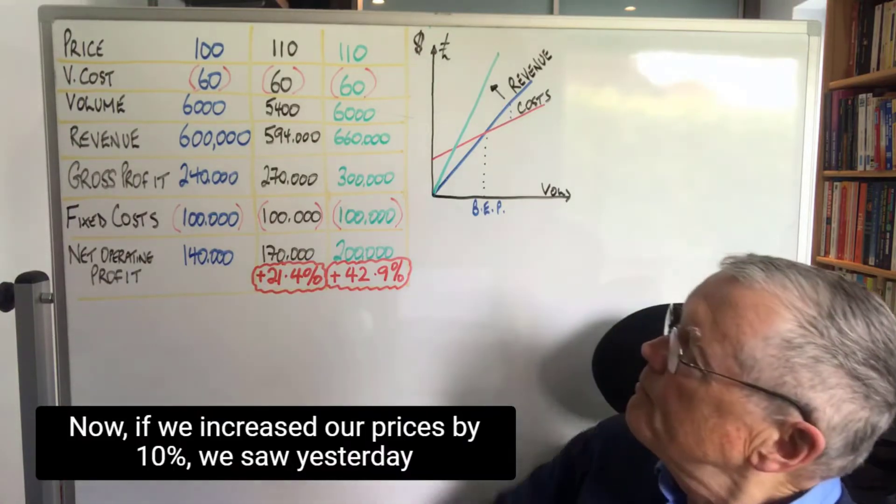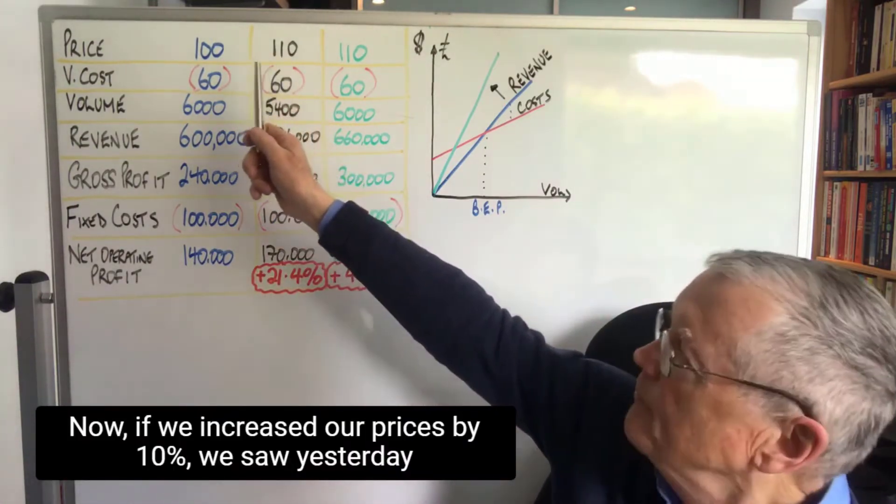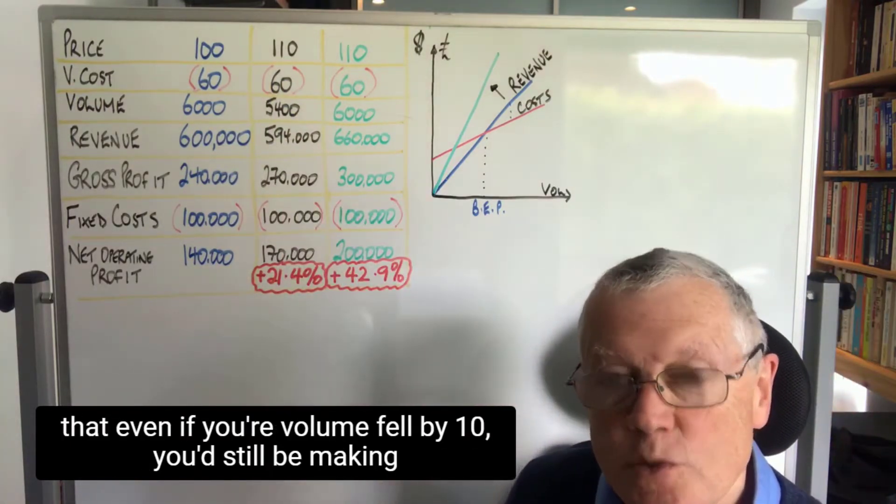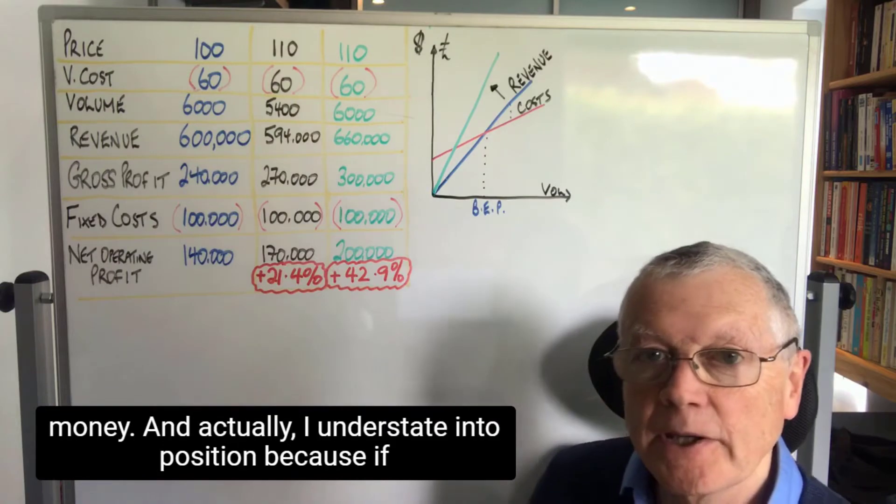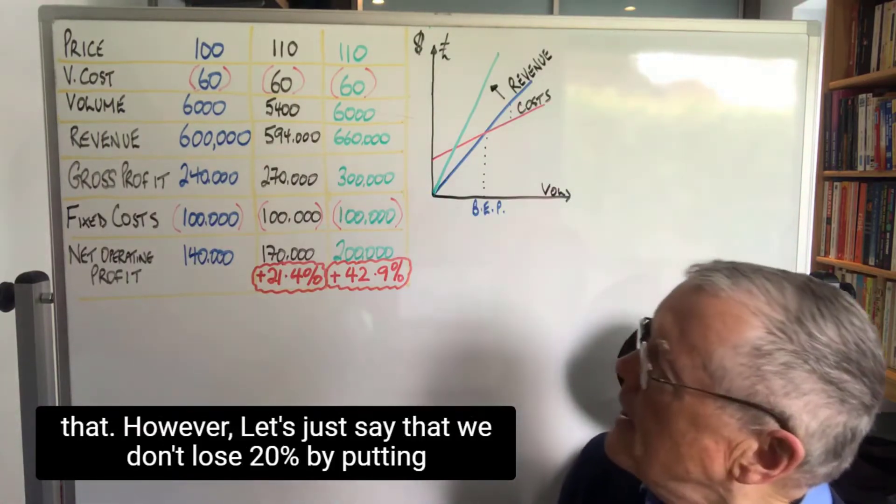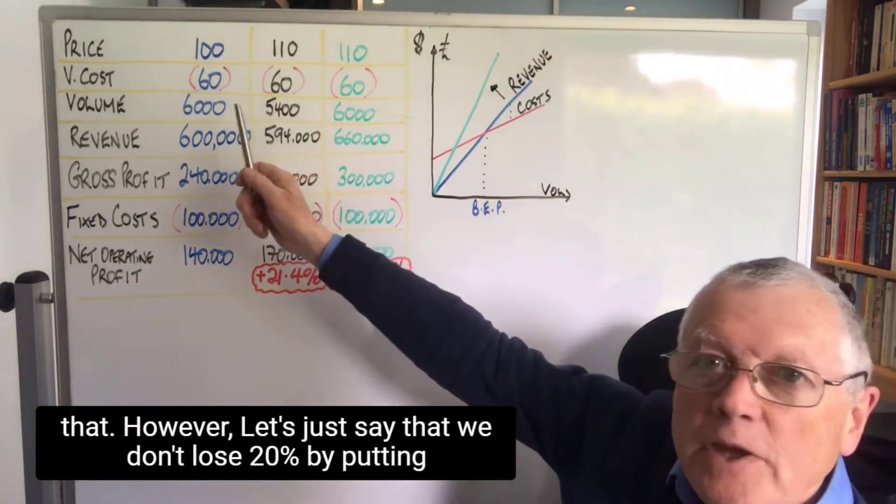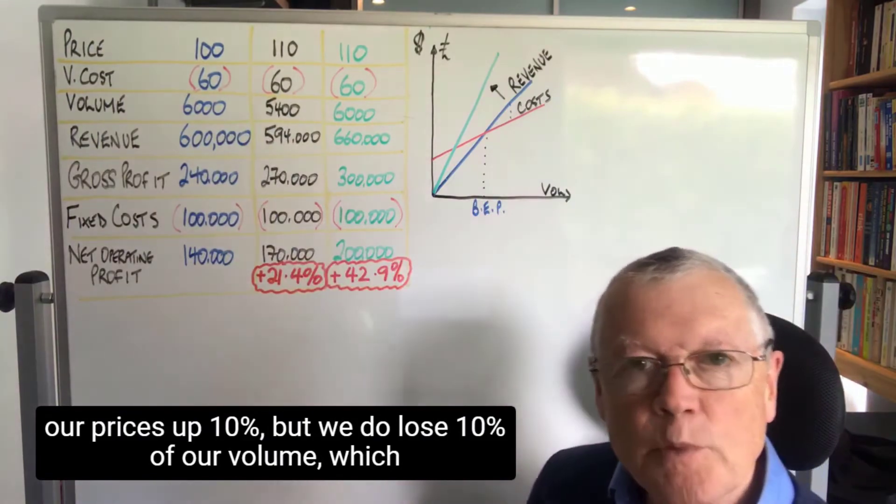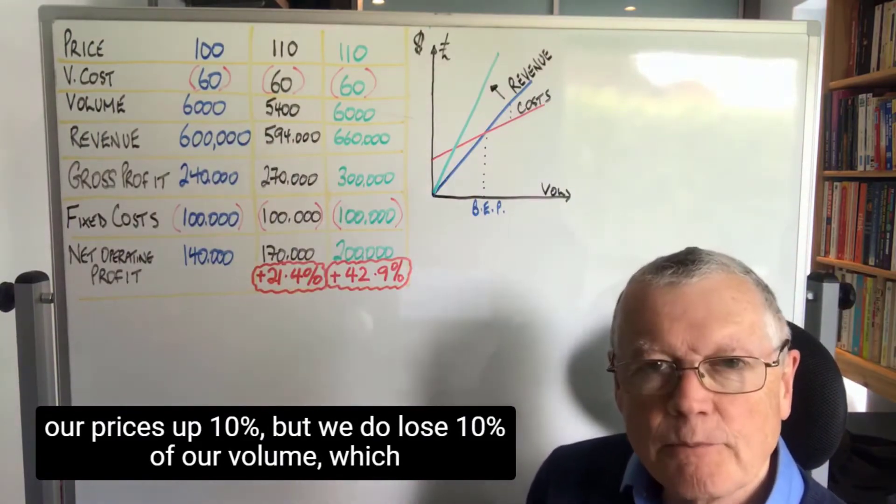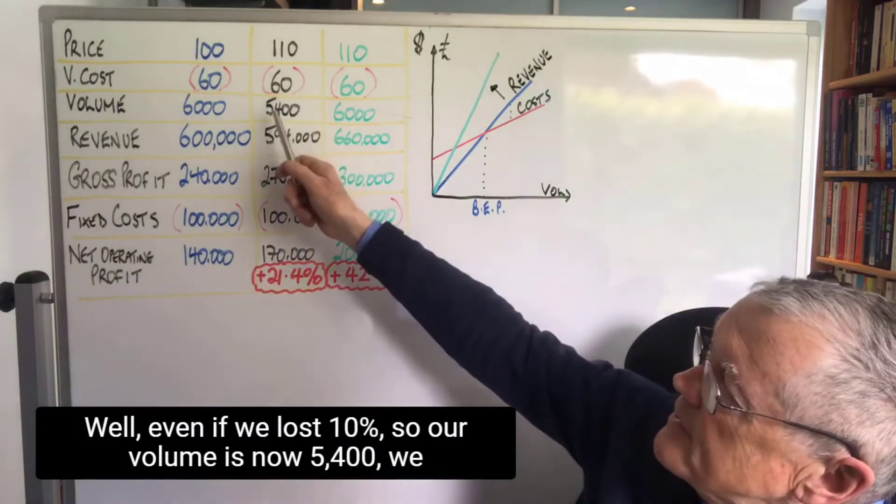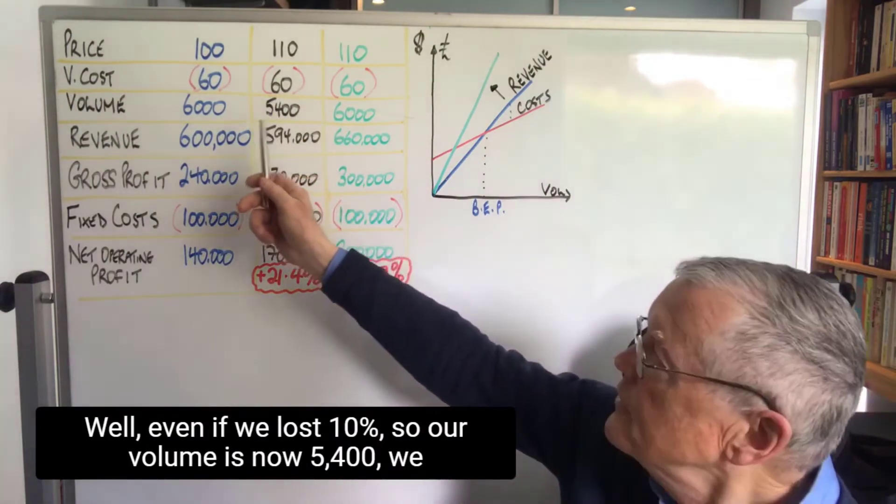Now if we increased our prices by 10%, we saw yesterday that even if your volume fell by 20%, you'd still be making money. And actually I understated the position because if you take into account the fixed costs, it's even better than that. However, let's just say that we don't lose 20% by putting our prices up 10%, but we do lose 10% of our volume, which would be fairly pessimistic really. Well, even if we lost 10%, so our volume is now 5,400...